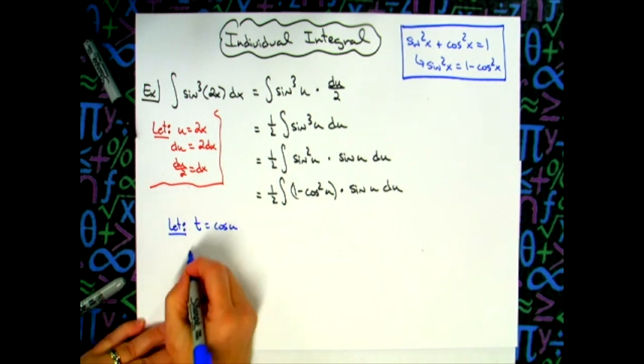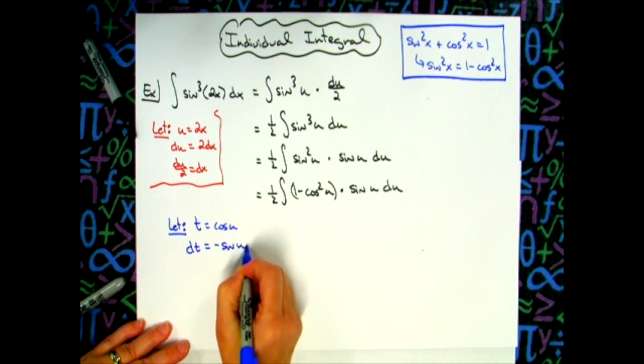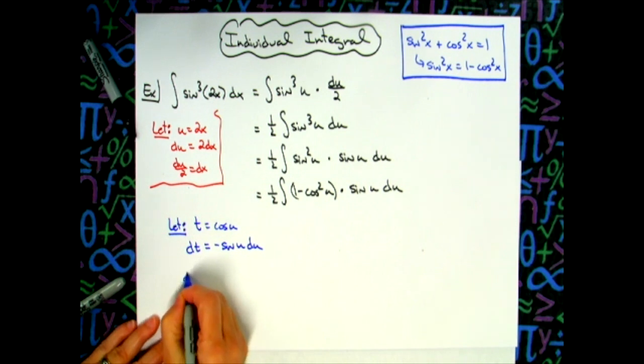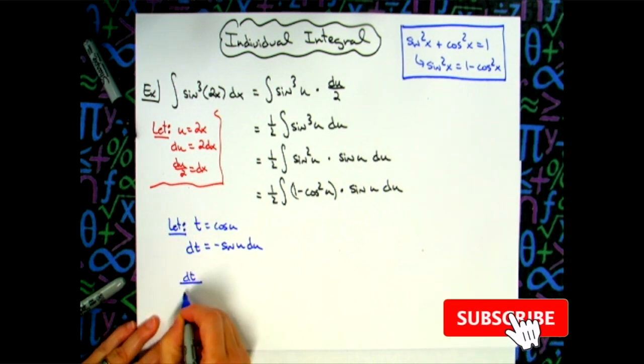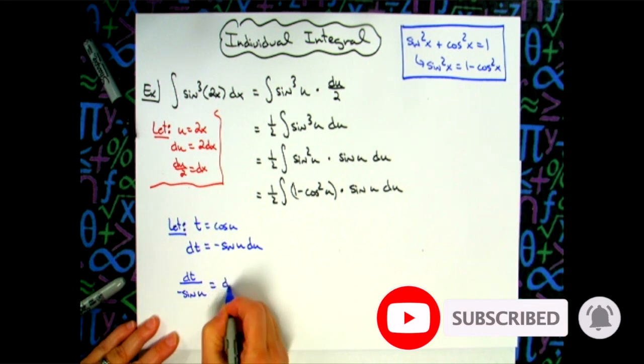Again, taking the derivative of both sides, I'll have dt now is equal to negative sine u du. I want to solve all the way down for my du, which will give me dt over negative sine u is equal to du.